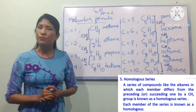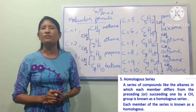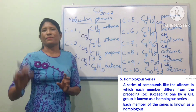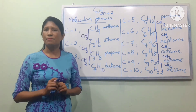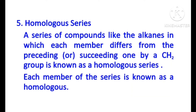So if you have a homologous, then you can see the homologous series. The homologous series is a series of compounds, like the alkanes, in which each member differs from the preceding or succeeding one by a CH2 group, known as a homologous series.